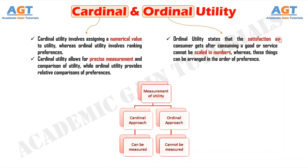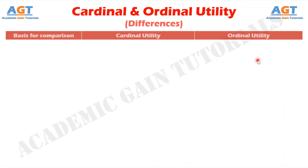Ordinal utility states that the satisfaction a consumer gets after consuming a good or service cannot be scaled in numbers, whereas these things can be arranged in the order of preference. Let's look into the basic differences between cardinal and ordinal utility in a tabular form.